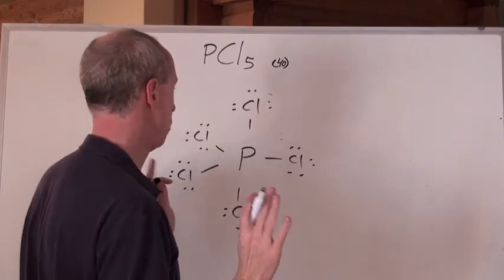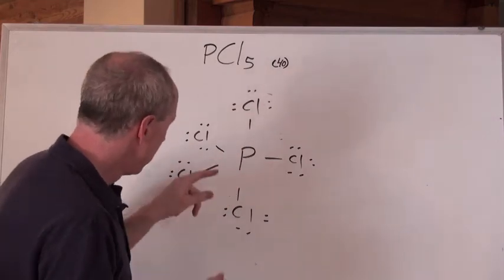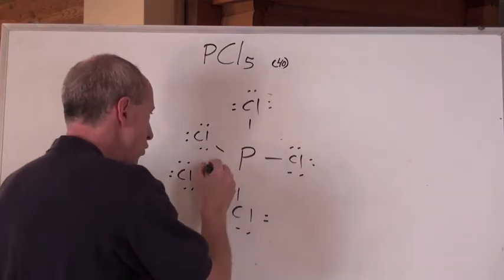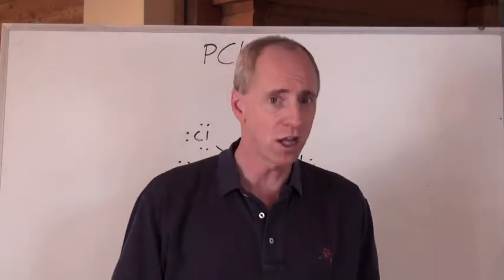You look at that and you say, whoa, whoa, the deal is here that I've got phosphorus in the middle going 2, 4, 6, 8, 10, and that ain't right. That's not an octet.